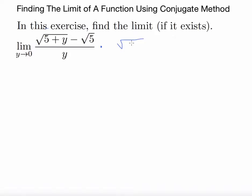So, root 5 plus y plus root 5. Now the plus here will be the conjugate form of this negative here, over root 5 plus y plus root 5.